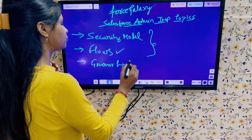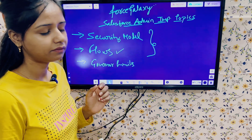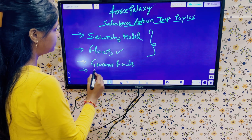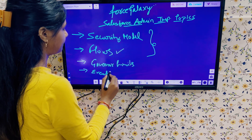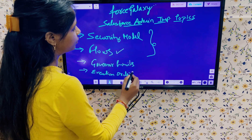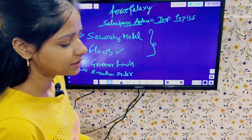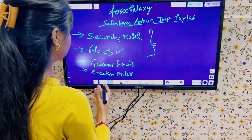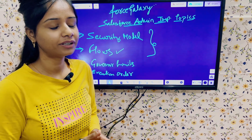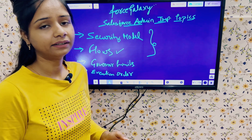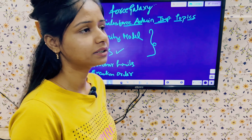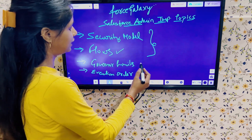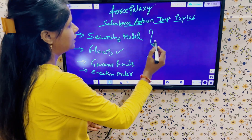Governor limits is also an important topic. You must be aware about the different governor limits — that is, the specific numbers. Then we have execution order, which is also an important topic in Salesforce admin. What is the execution order in Salesforce? They may not focus heavily on scenario-based questions here, but you must be aware about the execution order — when the system validation, custom validation, or automation tools will run — so you understand the flow of execution order in Salesforce.